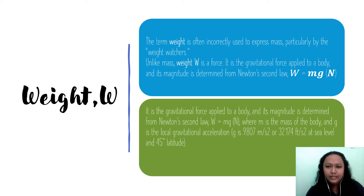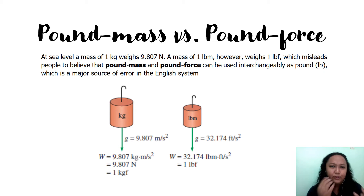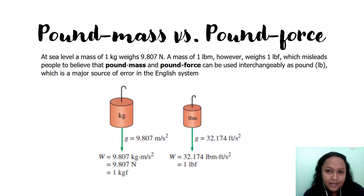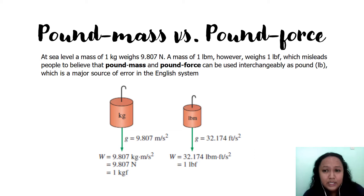If you are asked for your weight in thermodynamics, the correct answer is mass times gravity. For example, if your mass is 50 kg, then your weight is 50 times 9.81 meters per second squared, which gives you your weight expressed in newtons. The local acceleration due to gravity is used here. At sea level, 1 kilogram of mass weighs 9.81 newtons, while 1 pound-mass weighs 1 pound-force, which misleads people into using them interchangeably.